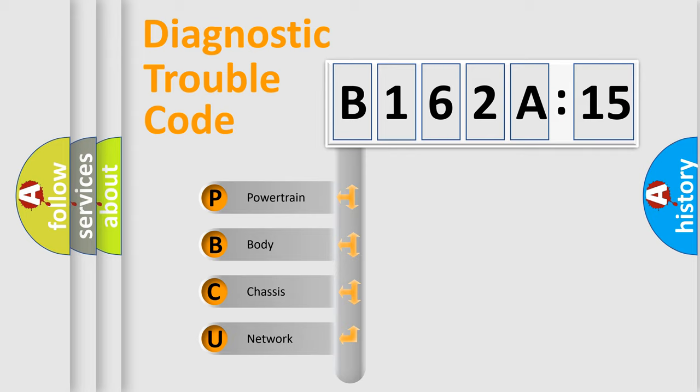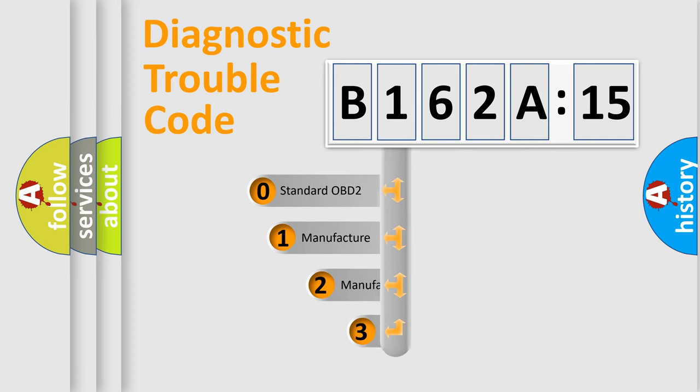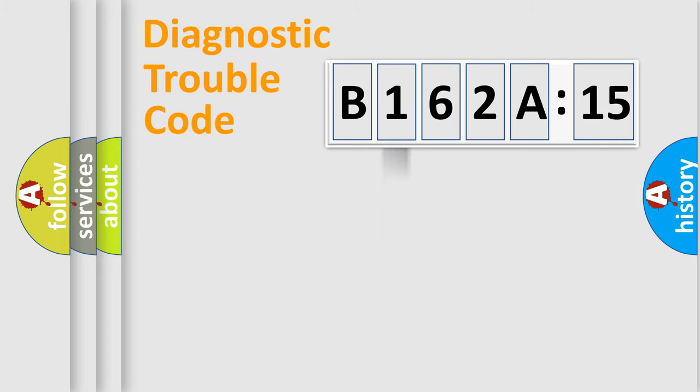If the second character is expressed as zero, it is a standardized error. In the case of numbers 1, 2, 3, it is a more prestigious expression of the car-specific error. The third character specifies a subset of errors. The distribution shown is valid only for the standardized DTC code. Only the last two characters define the specific fault of the group.